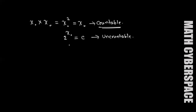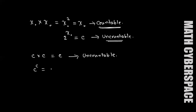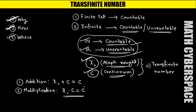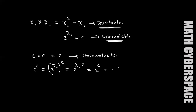In CSR NET exam there are many questions about Aleph naught squared. Remember: Aleph naught squared is countable, but 2 to the power Aleph naught equals continuum C, which is uncountable. For C squared: C times C equals C, which is uncountable. For C to the power C: since C equals 2 to the power Aleph naught, we get 2 to the power (Aleph naught times C) equals 2 to the power C, and 2 to the power C equals C — uncountable.